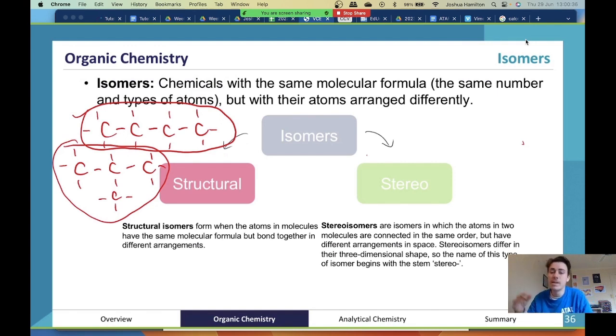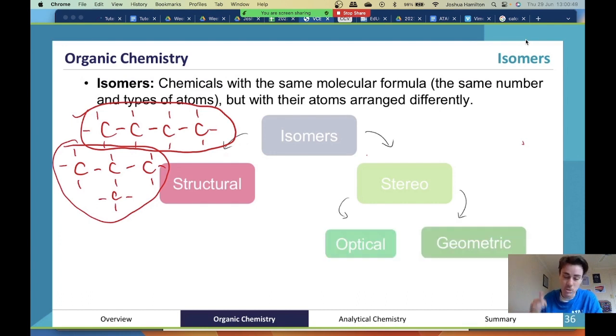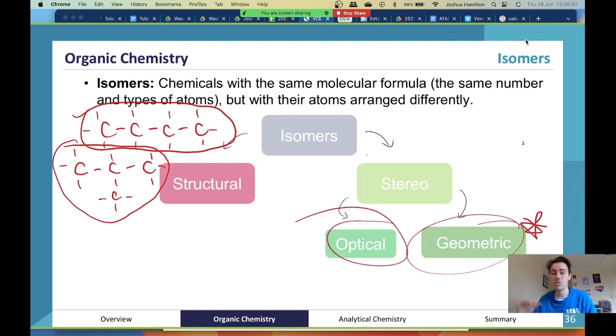Stereoisomers differ in that there's no big structural change, you have just subtle differences in how they are displayed in three-dimensional space. There are two forms: optical and geometric. Optical are the ones that are really confusing. Geometric are pretty straightforward, and geometric is really big in food chem as well.